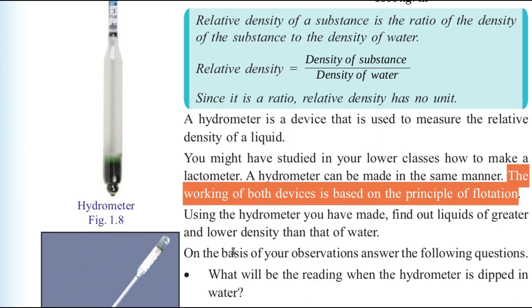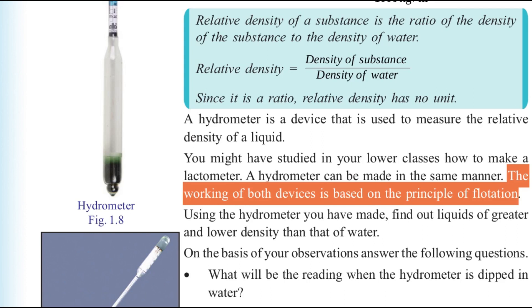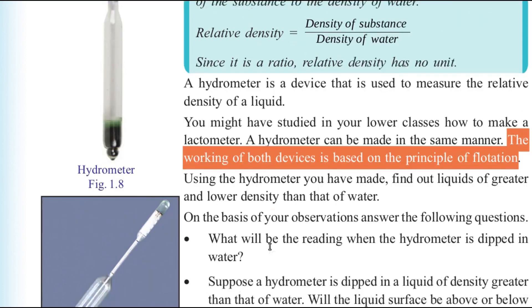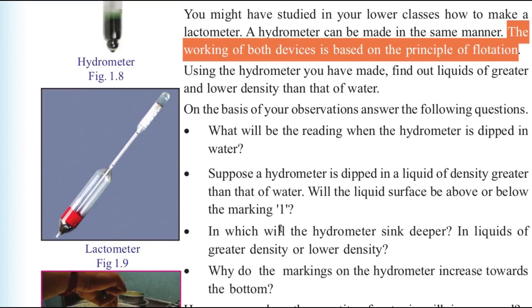The working of a hydrometer and a lactometer is based on the principle of flotation. Remember: both devices work on the principle of flotation. You can also make a simple hydrometer using a straw.